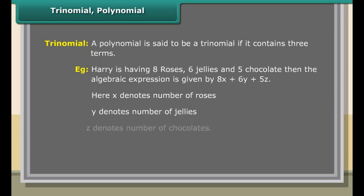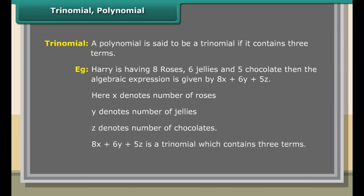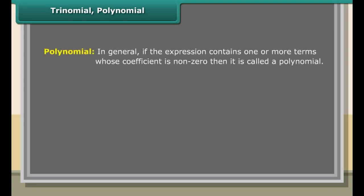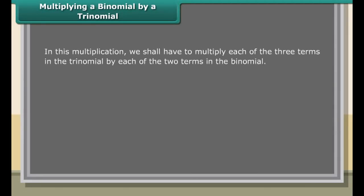A polynomial with three terms is a trinomial. For example, if Harry has eight roses, six jellies, and five chocolates, the algebraic expression is 8X plus 6Y plus 5Z, where X denotes roses, Y denotes jellies, and Z denotes chocolates. Therefore, 8X plus 6Y plus 5Z is a trinomial containing three terms.